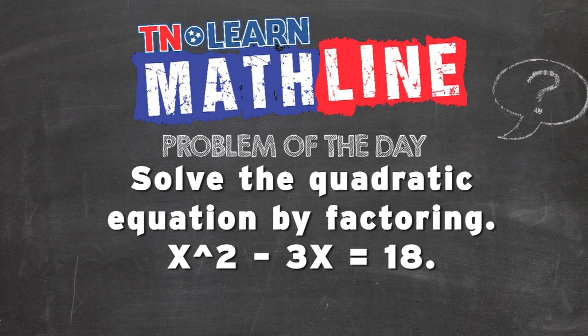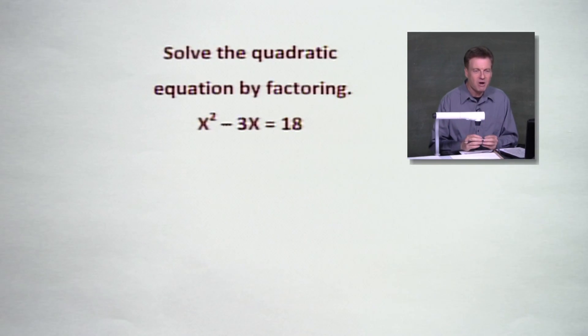Solve the quadratic equation by factoring, that is x squared minus 3x equaling 18. Once again, that's solve the quadratic equation by factoring x squared minus 3x equaling 18. So let's take a look at this problem.